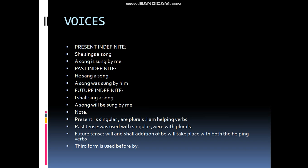Now, present indefinite tense: 'She sings a song.' You can identify it as present indefinite by the presence of 's' with the first form of the verb. To transform it: 'a song' is the object, so it comes first. The helping verb for present tense with singular is 'is' — 'A song is sung by her.' She changes to her.